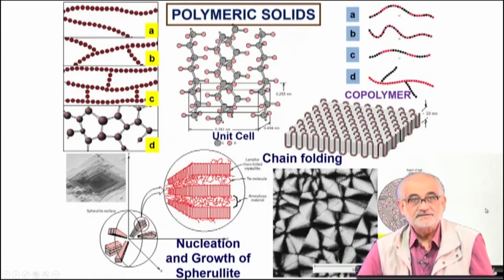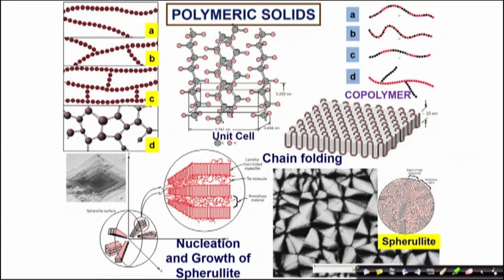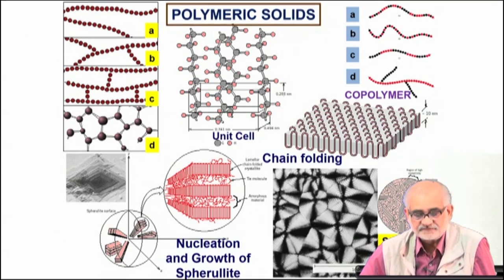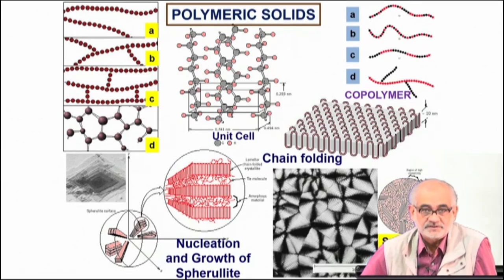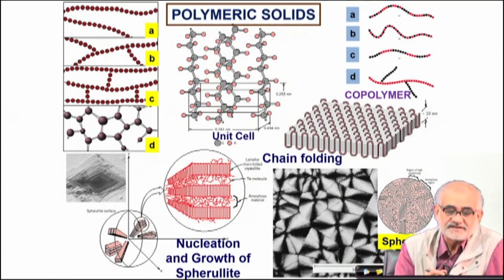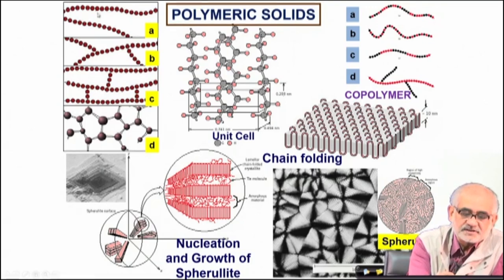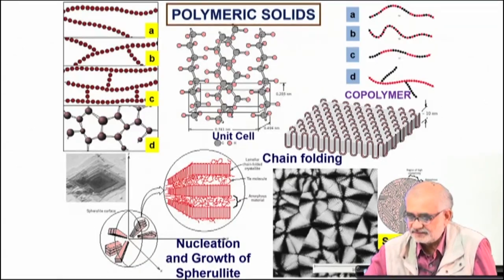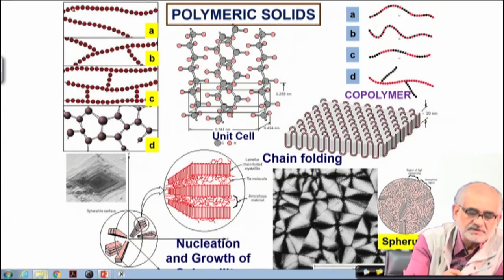One other thing we need to discuss at this moment is the way polymeric solids behave, or how we can strengthen polymeric solids. Crystallization or partial crystallization is a possible strategy, and in fact there are many polymers which actually undergo such kind of partial crystallization and in the process offer higher strength than in normal condition. Before we go into that, let us quickly recapitulate: we discussed the structure of polymeric solids and said they are essentially made up of monomers.